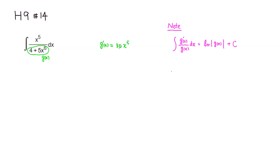You can see that we almost have that, except that we need 30 in front of x to the 5th. So we need this guy right here. So what you can do is you can multiply top and bottom by 30.